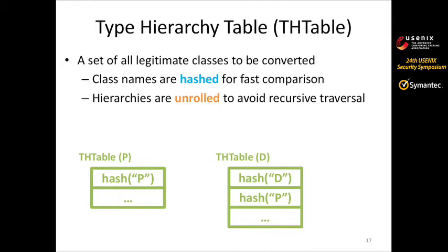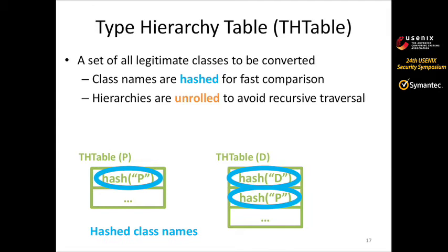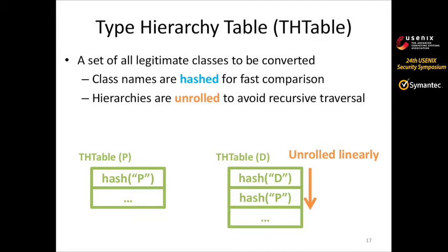The TH table is a set of all legitimate classes to be converted, where class names are hashed for fast comparison and hierarchies are unrolled to avoid recursive traversal. For example, class P includes itself. For class D, because P is its parent class, D includes both D and P. Instead of storing the string itself, we always store the hashed string to avoid expensive string comparison operations. We lay out this data linearly so CAVER can simply enumerate them to understand class relationships for any given class.